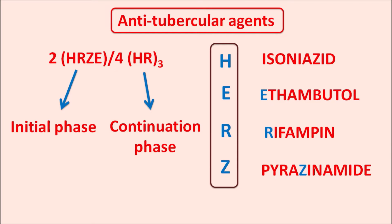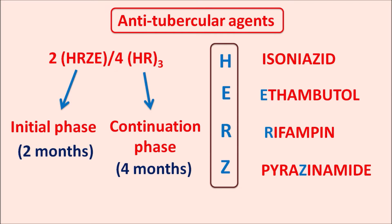The abbreviations are important for reading prescriptions since these drugs are given in combination. For example, a regimen like 2HRZD/4HR(3) shows the initial phase (HRZD — isoniazid, rifampin, pyrazinamide, ethambutol) for two months with daily dosing, and the continuous phase (HR) for four months given three times a week, indicated by the subscript 3.